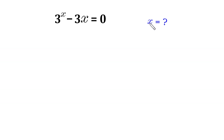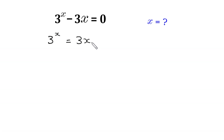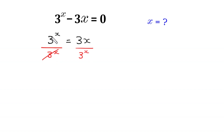Let's start by moving this negative 3 times x to the right side. 3 to the power x is equal to positive 3 times x on the right side. Now we divide both sides of this equation by 3 to the power x. This 3 to the power x cancels out, and at the left side we are left with 1 is equal to...